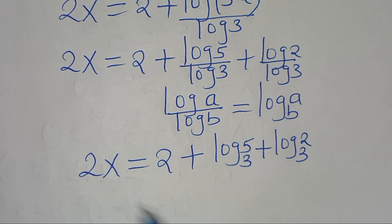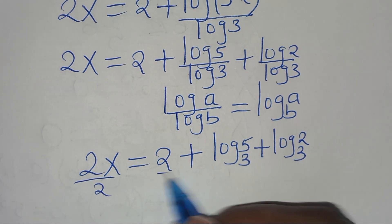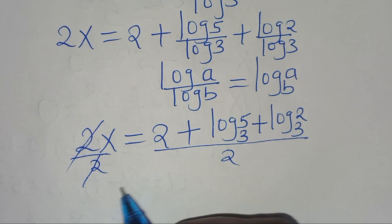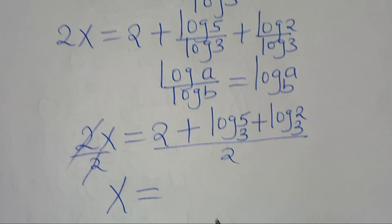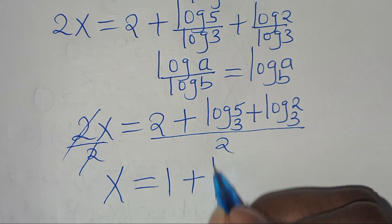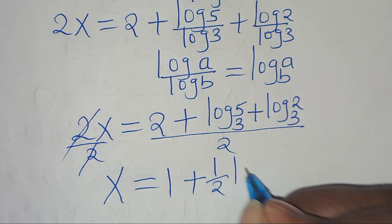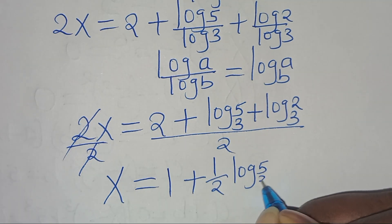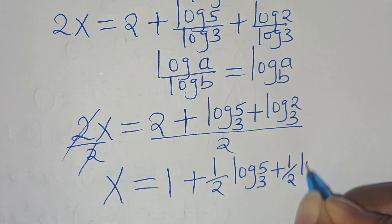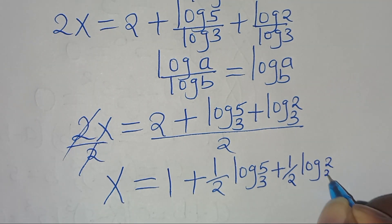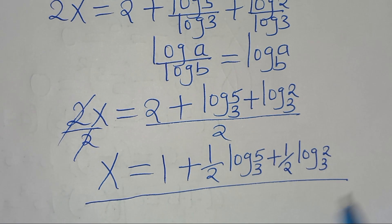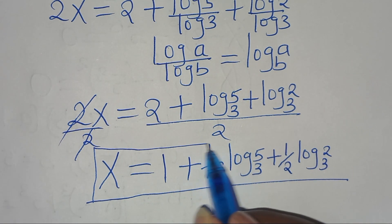The next step is to divide both sides by 2, so x equals 2 divided by 2 — which is 1 — plus one-half log base 3 of 5, plus one-half log base 3 of 2. This is the value of x.